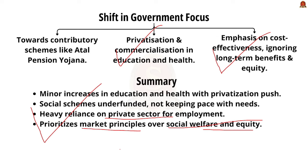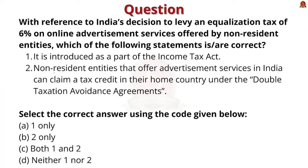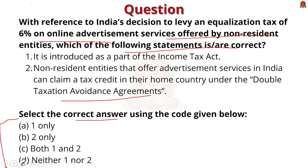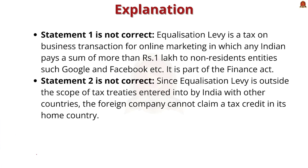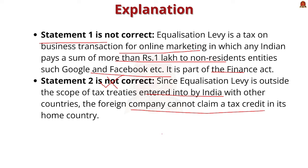Practice Question 1: With reference to India's decision to levy an equalization tax of 6% on online advertisement services offered by non-resident entities, which statements are correct? Statement 1: It was introduced as a part of the Income Tax Act. Statement 2: Non-resident entities offering advertisement services in India can claim a tax credit in their home country under DTAA. The correct answer is D — neither 1 nor 2. Statement 1 is incorrect because equalization levy is part of the Finance Act, not the Income Tax Act. Statement 2 is also incorrect because equalization levy is outside the scope of tax treaties entered by India, so foreign companies cannot claim a tax credit in their home country.